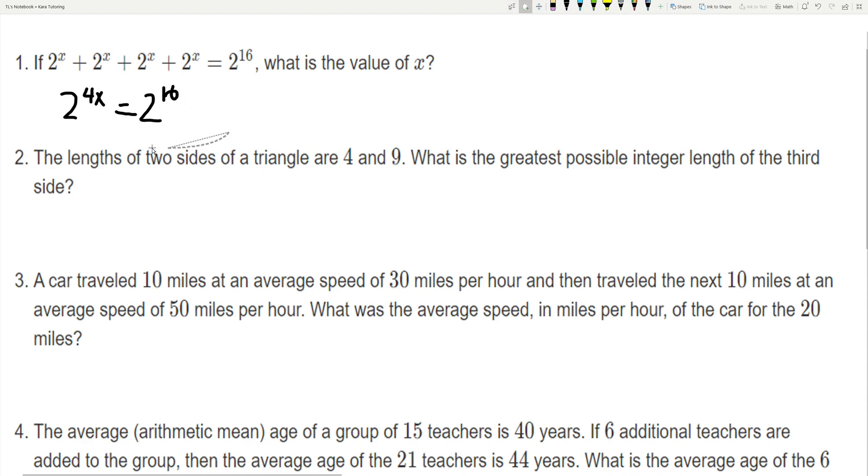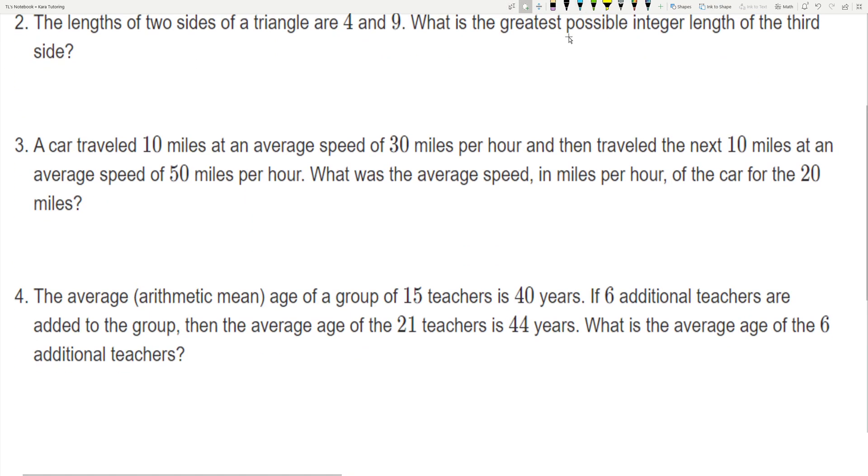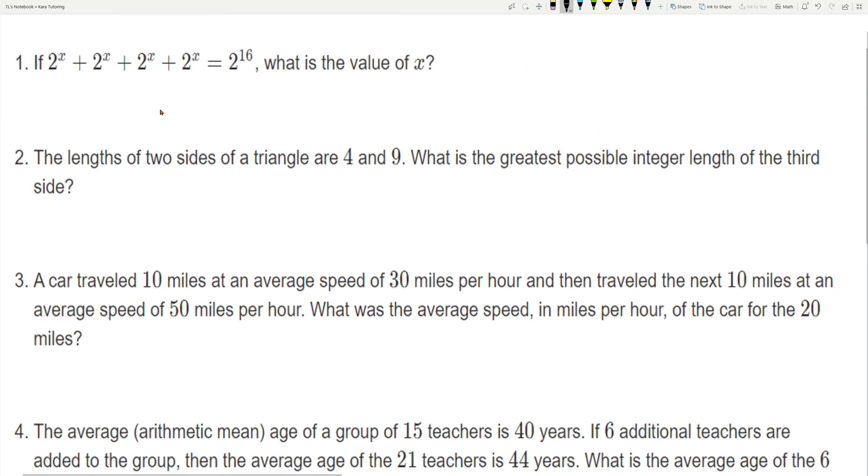But now what we're going to do is we're just going to combine all these. So one way you can rewrite this is you're going to have 4 times 2 to the x because you're just adding those four of those together is equal to 2 to the 16th power. And then you can also rewrite this 4 as 2 to the second power times 2 to the x is equal to 2 to the 16th power.